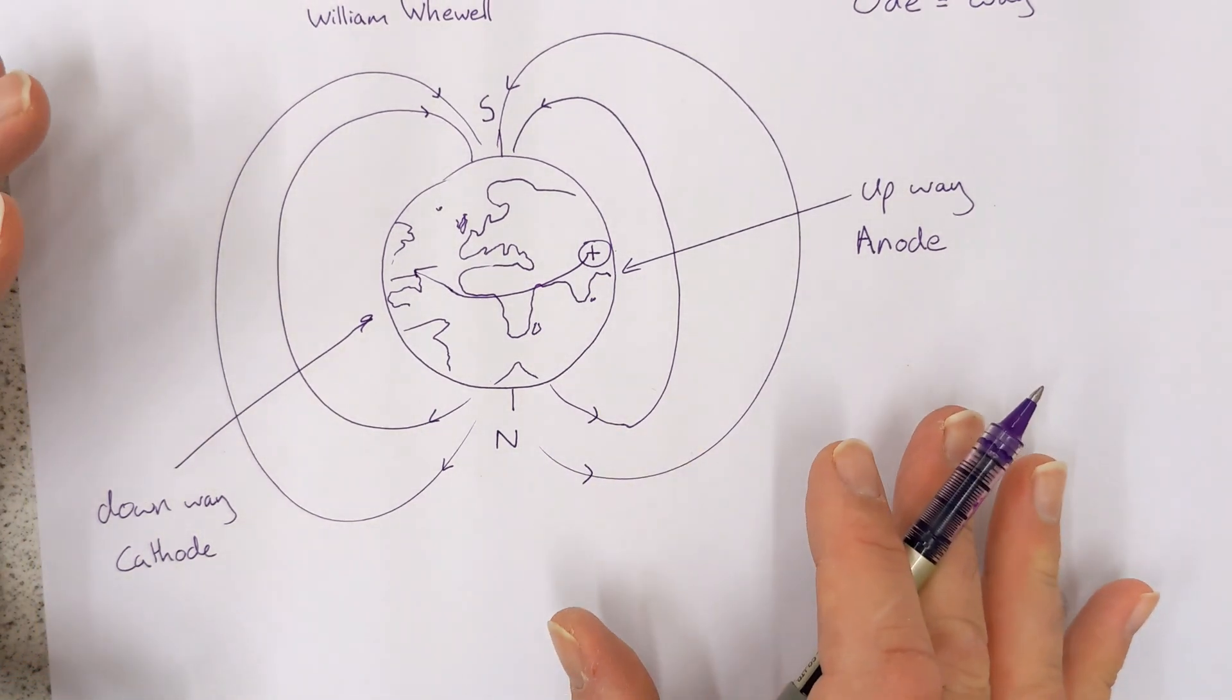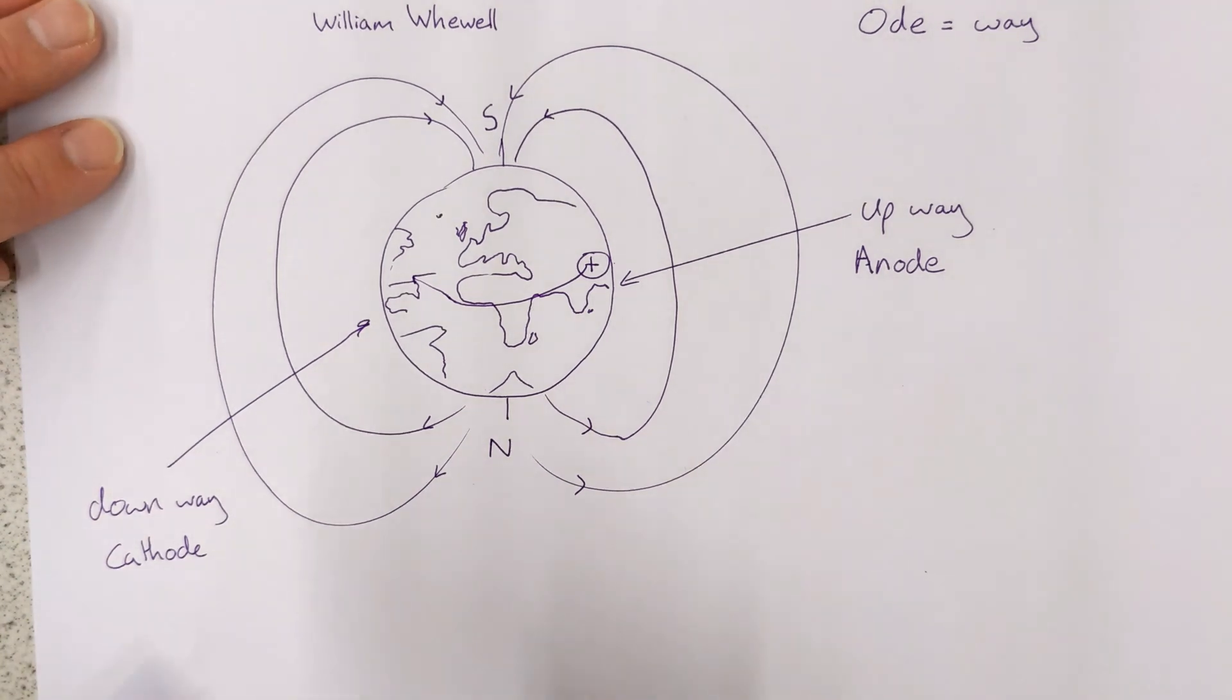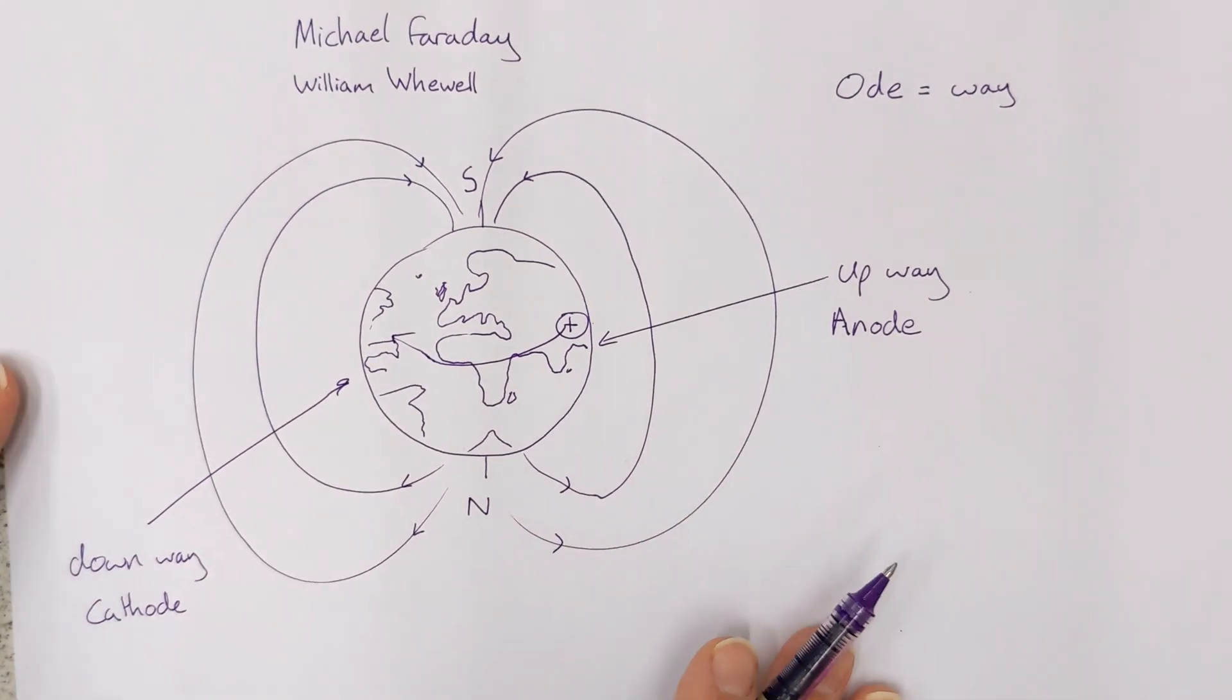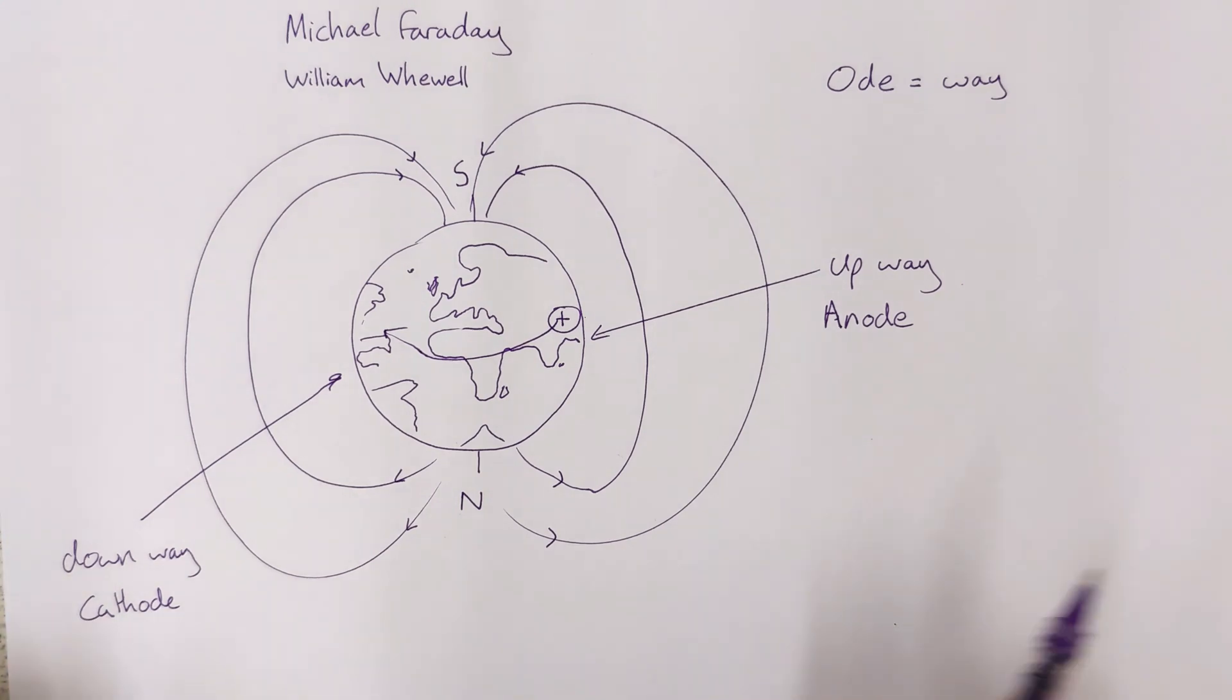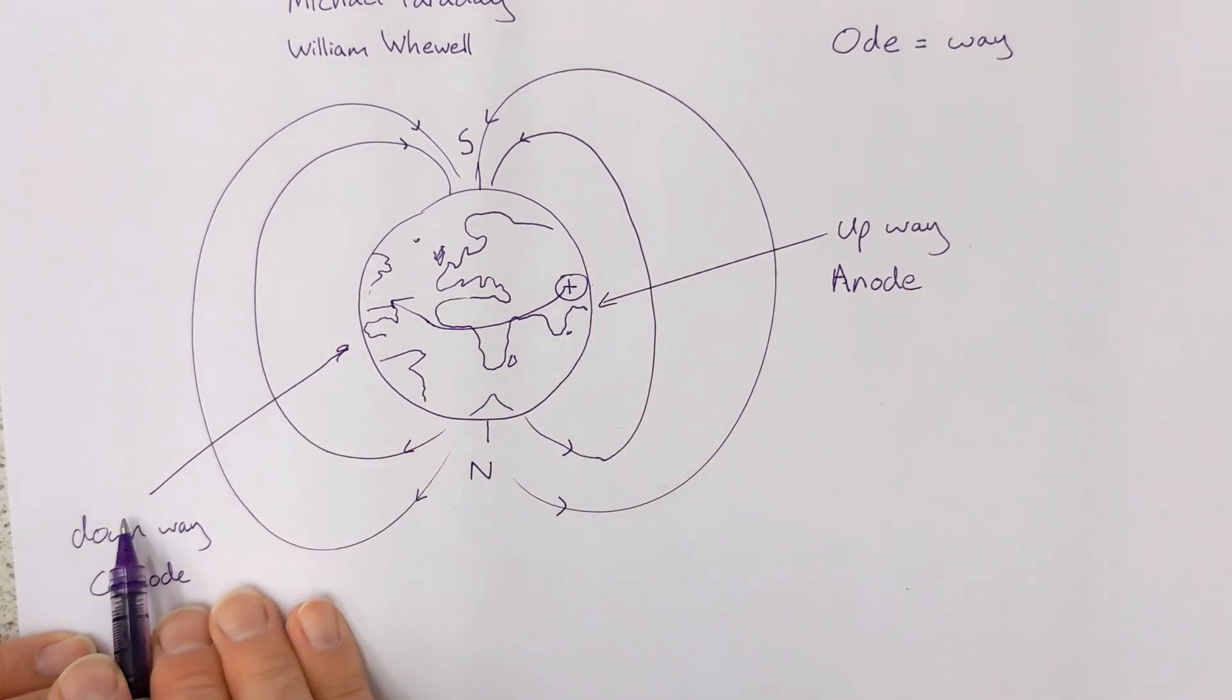Bear in mind that all of this discussion was going on before even John Dalton's atomic model was confirmed. The electron had not been discovered yet. That wouldn't be discovered for quite a few years. So this is all going on before certain key discoveries, and they needed a convention within electrochemistry.